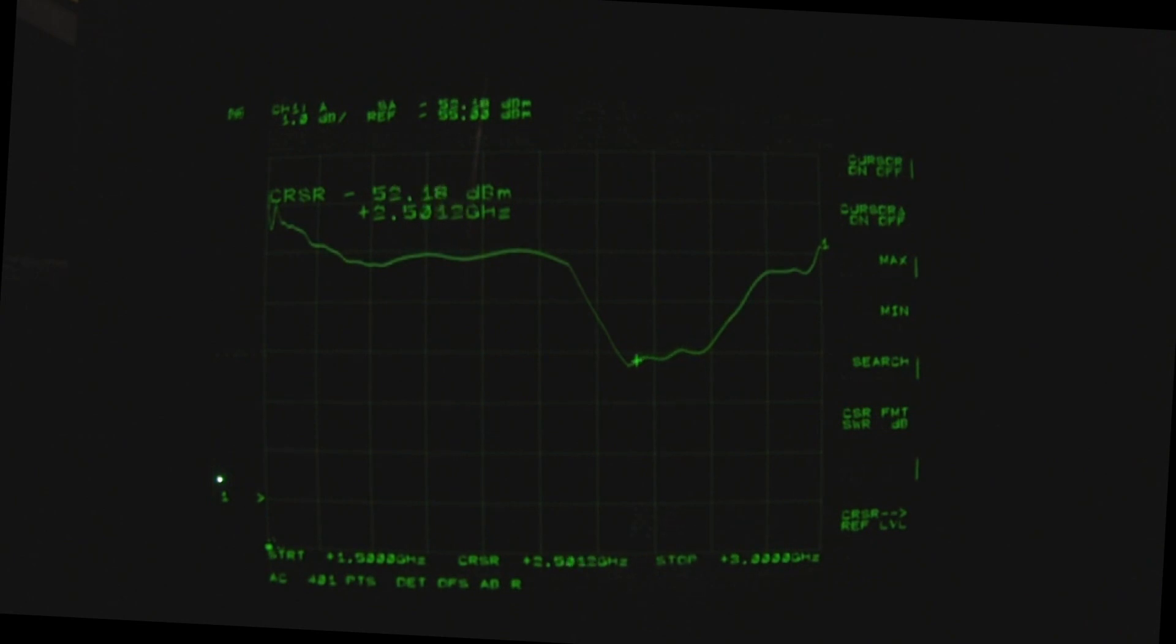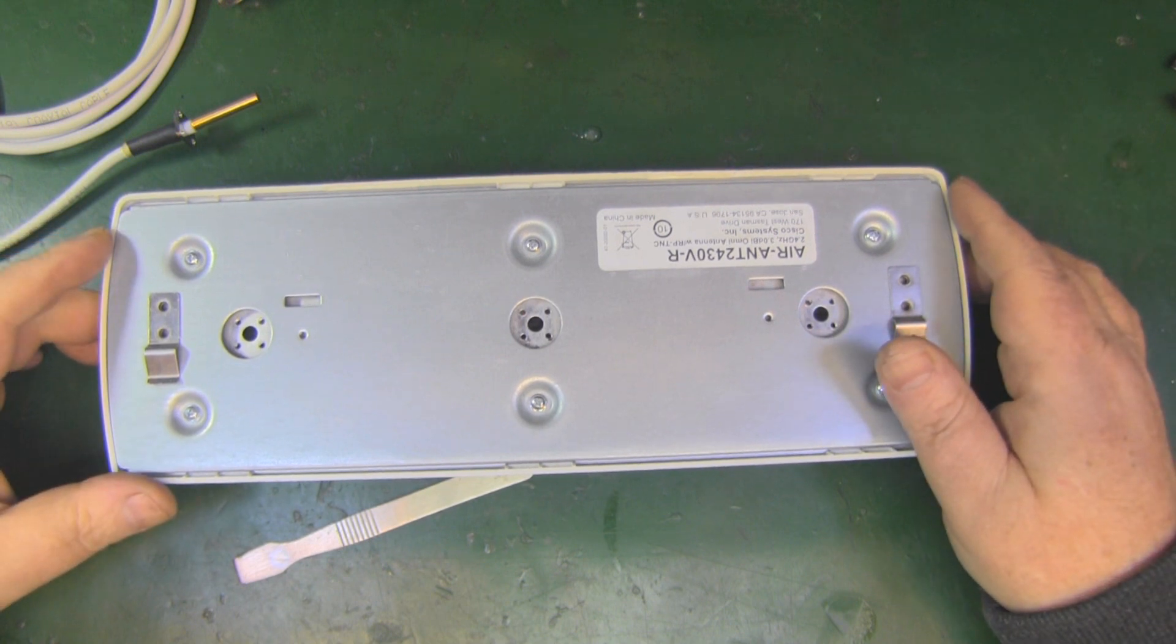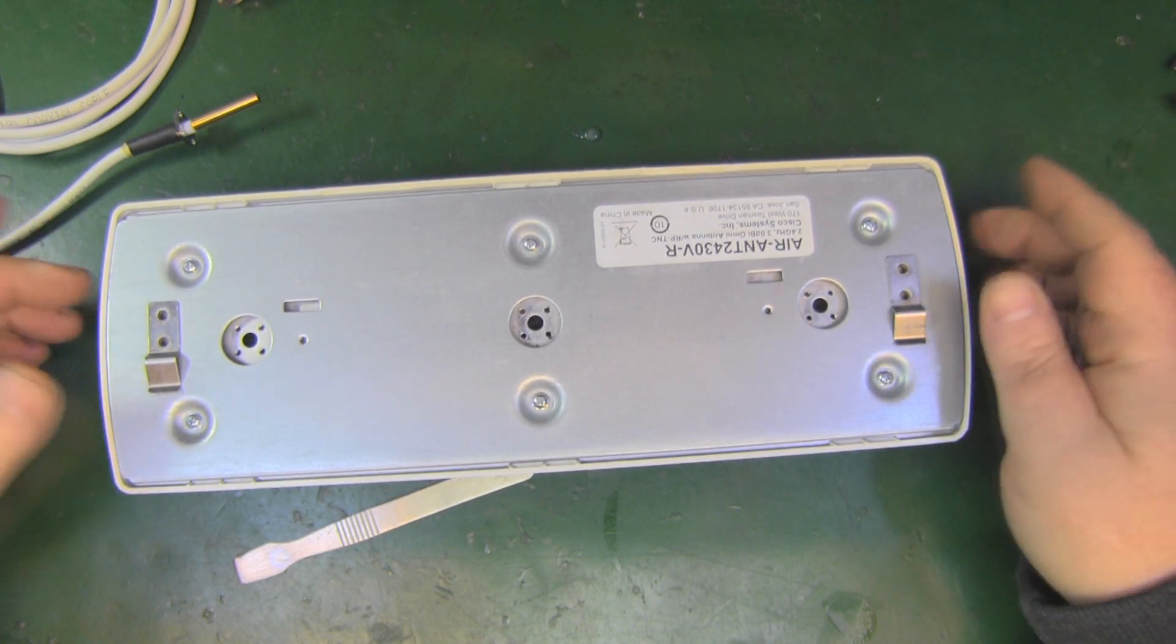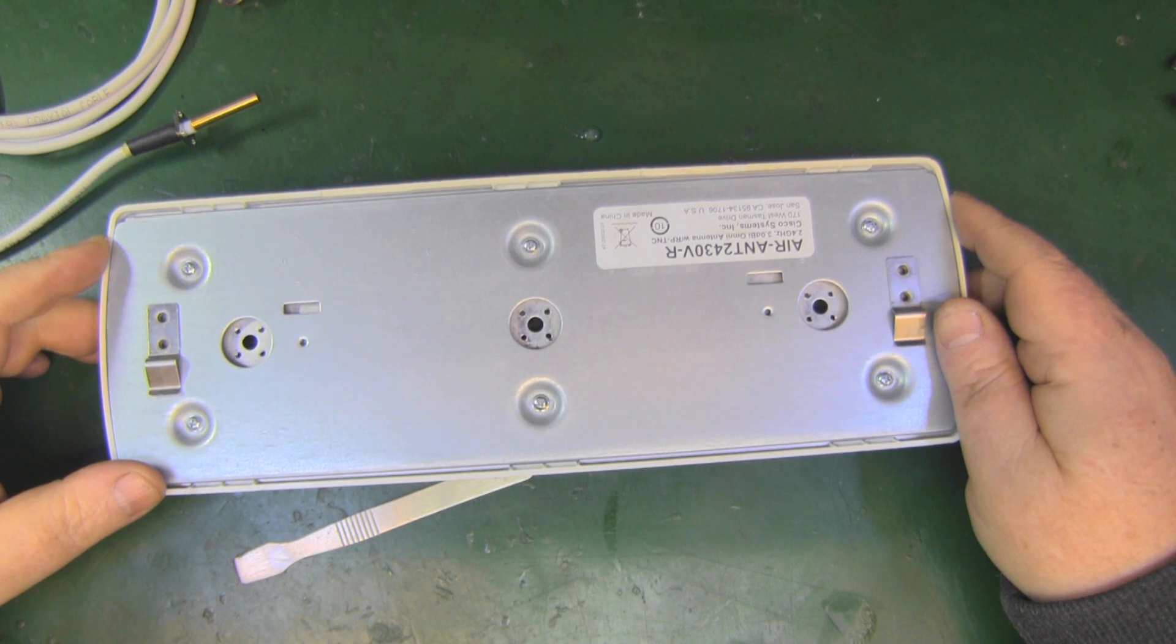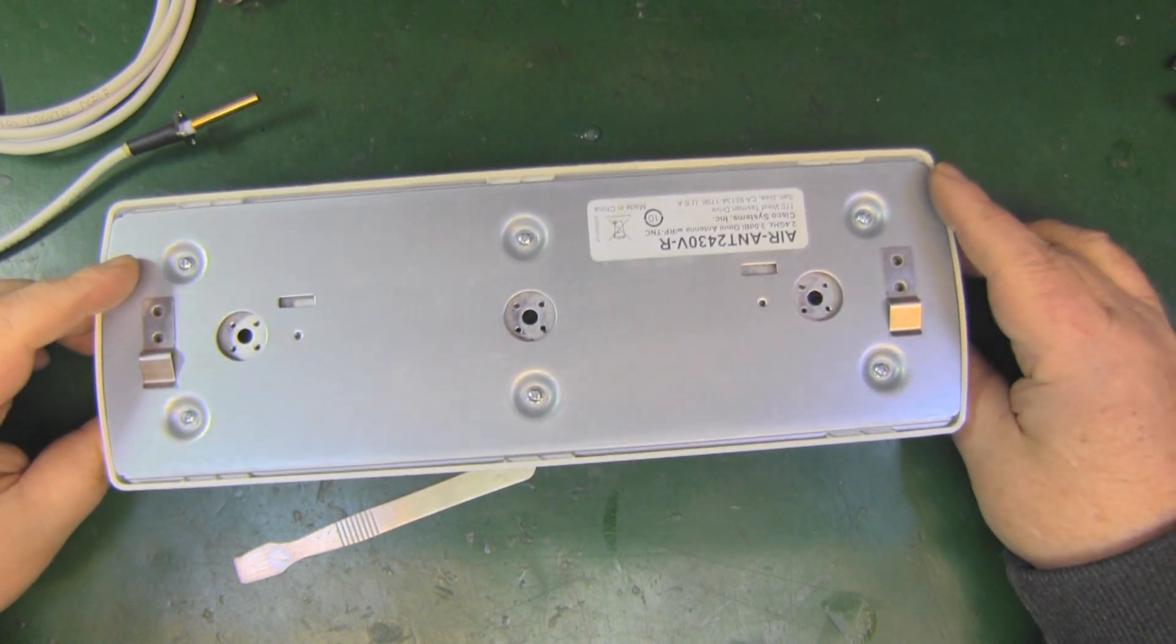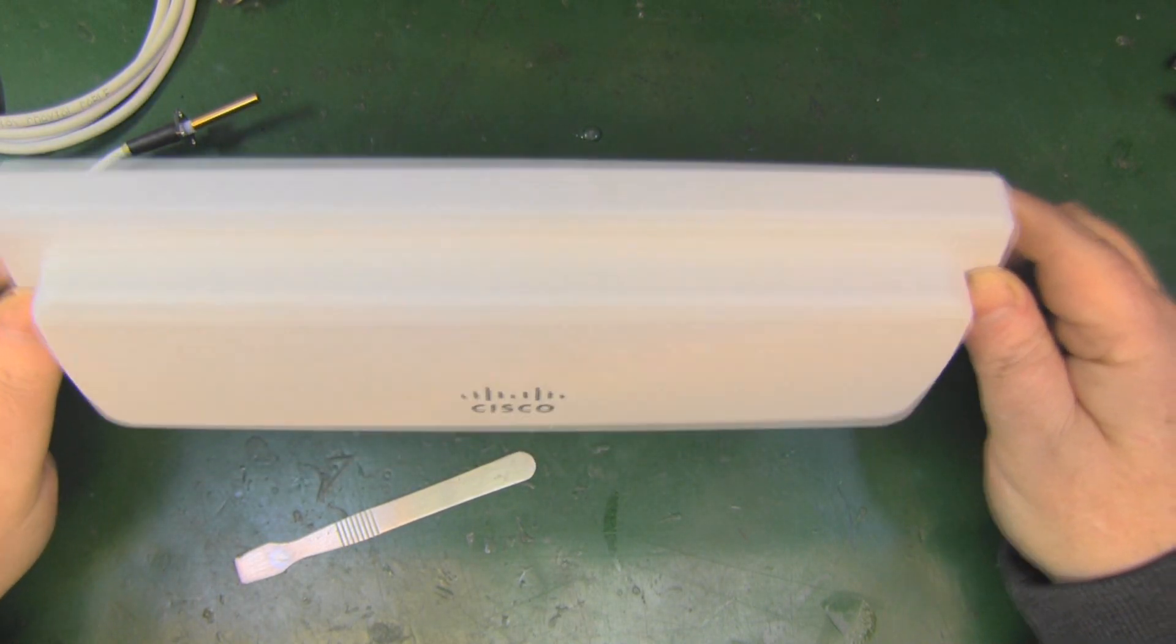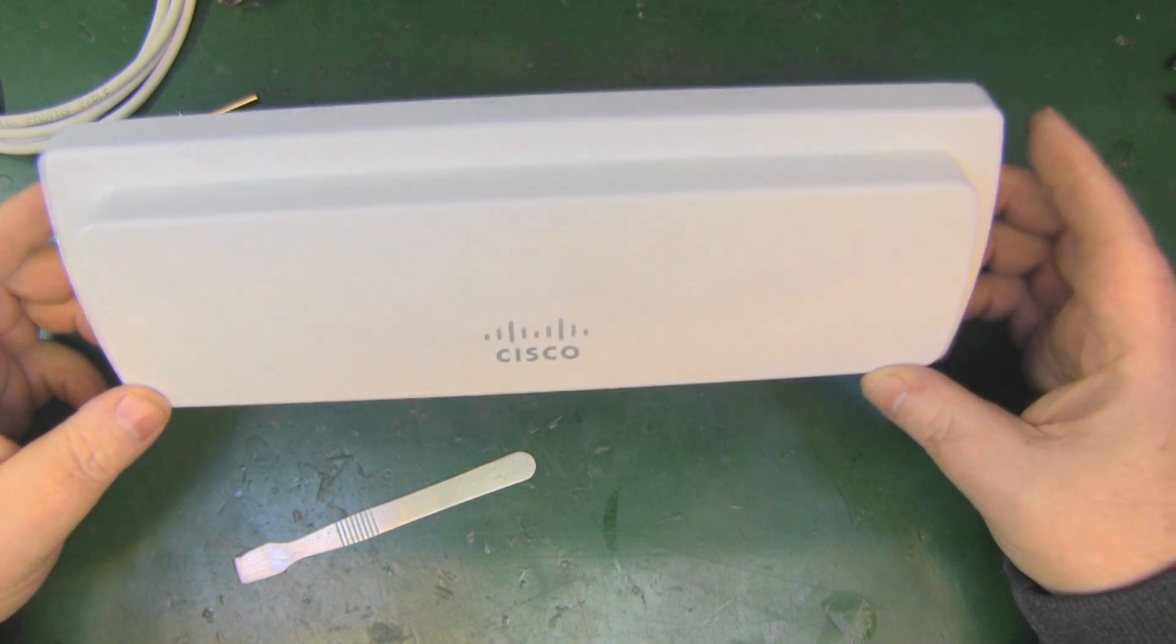It looked quite nice on the network analyzer, and that's to be expected from an antenna from Cisco. By the way, this is designed to be mounted on the ceiling with the little monopoles pointing downwards. It's such a low powered unit, not a great deal of dBm.